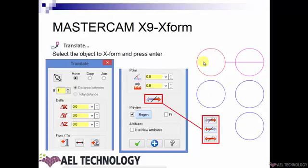If you want to define the translation based on an existing line on the screen, you can click on that option, select the line, and the object gets transformed based on the length and orientation or angularity of the line. If you want to translate an object using a polar method, you enter the degrees and the length, and your object will move to that particular angle and length.